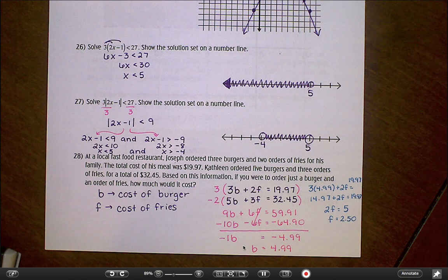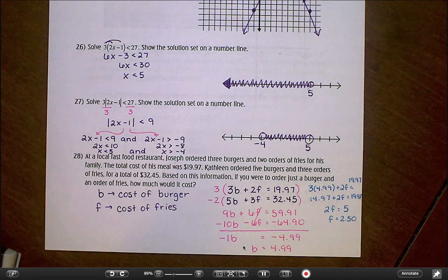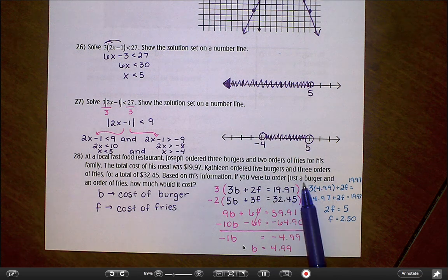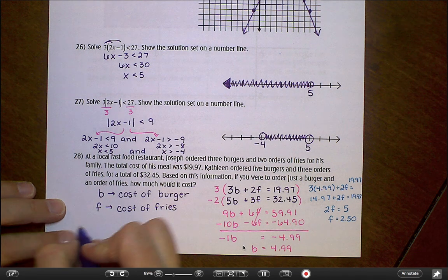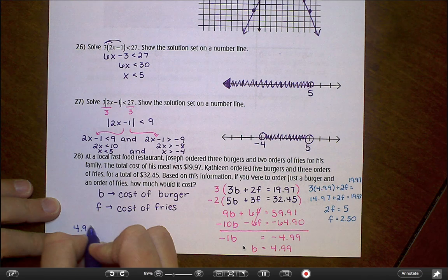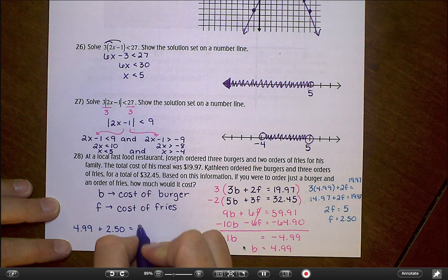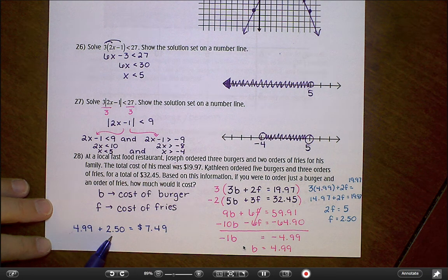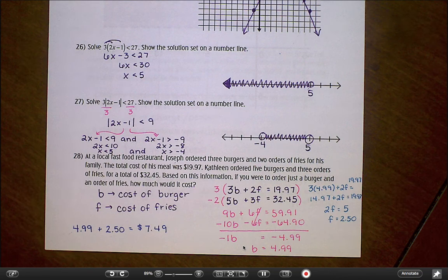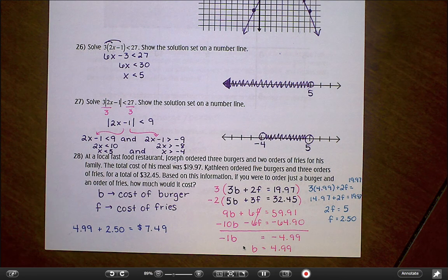So that's not technically what the question was asking. The question didn't say what is the cost of a burger and what is the cost of an order of fries, but I had to find those two things first. And now what I can do is I can take those and I can use it to answer this question. If I order just a burger and an order of fries, I'm going to be paying $4.99 plus $2.50. And I believe that's going to leave me at $7.49. So this would be my final answer, but I had to get these two things separately first.